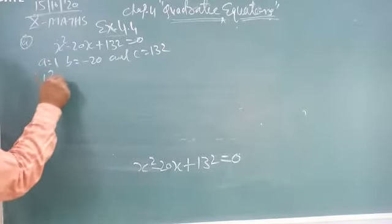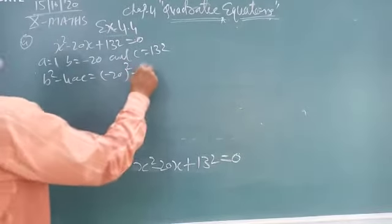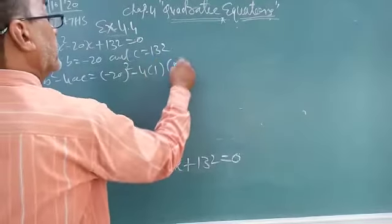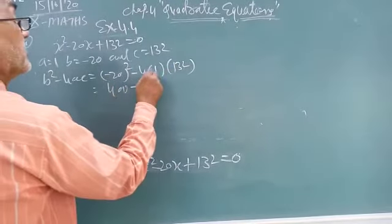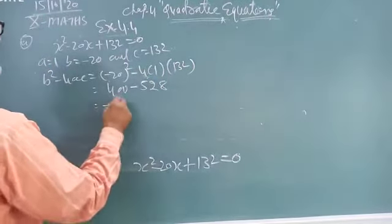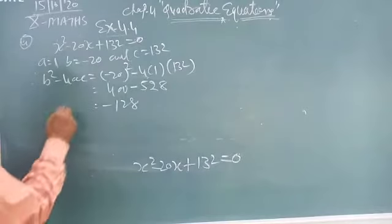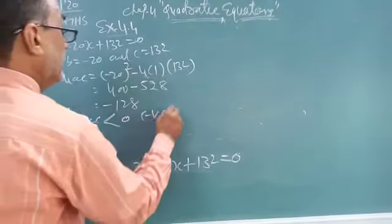What is the value of nature of the roots? B squared minus 4AC. Therefore, b squared minus 4AC equals minus 20 squared minus 4 times 1 times 132. So 20 squared means 400, minus 4 times 132 is 528. So minus 128. Now b squared minus 4AC less than 0. Less than 0 means negative.